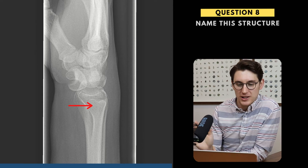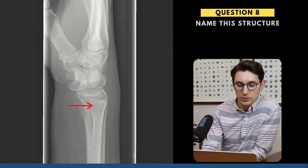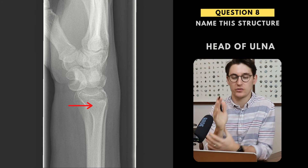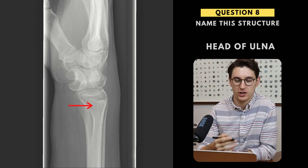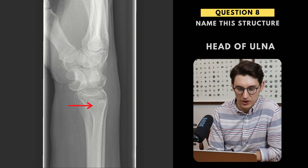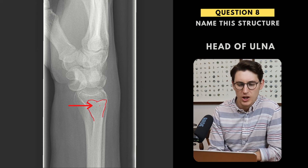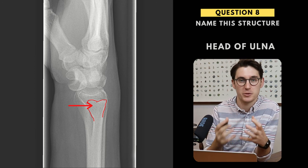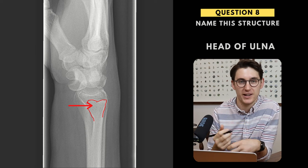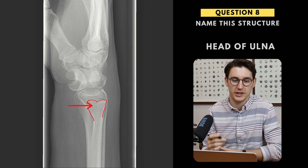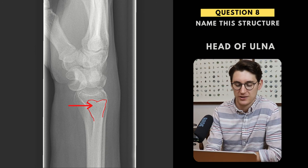Question eight — we're asked to label this structure or this bone. Here we have the head of the ulna. When you've got a lateral radiograph, you can't tell which bone is closest to you and which is furthest away. What you need to know is that the radius is much bigger towards the wrist, and the ulna is much smaller there. It's different towards the elbow — the ulna is the larger bone at the elbow with a small radial head. So this is the head of the ulna bone.